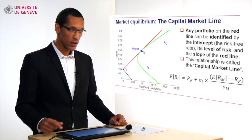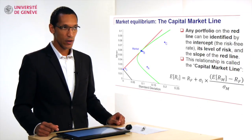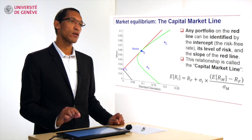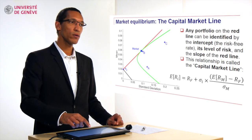This equation links risk and return, but not for all asset in the market. It links risk and return only for those portfolios that are optimally diversified and are on this red line.